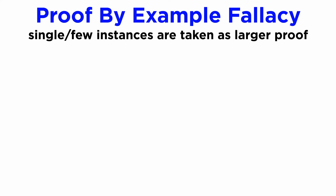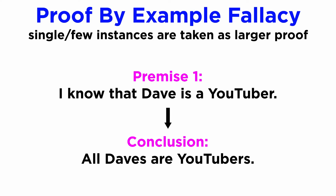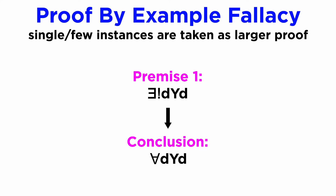We can also talk about the proof by example fallacy in quantificational logic, which happens when a single or merely a few instantiations of something are taken to be representative of that thing instead of an adequate proof of it. An example would be: I know that Dave is a YouTuber, therefore all Daves are YouTubers, which can be represented this way. This is a basic and unwarranted shift from a particular to a universal sentence, which can also be represented this way.